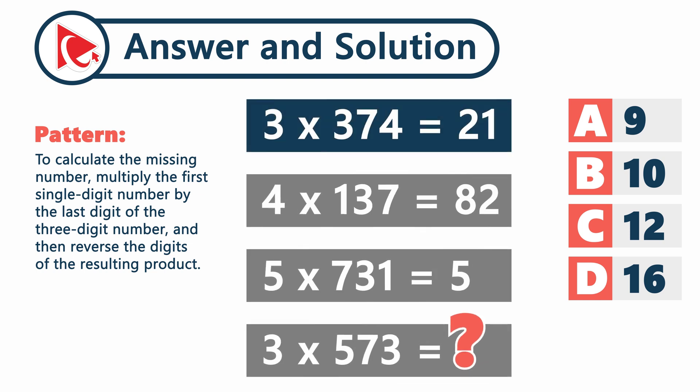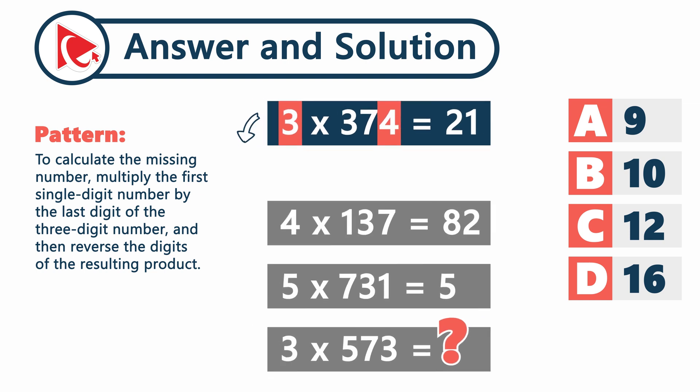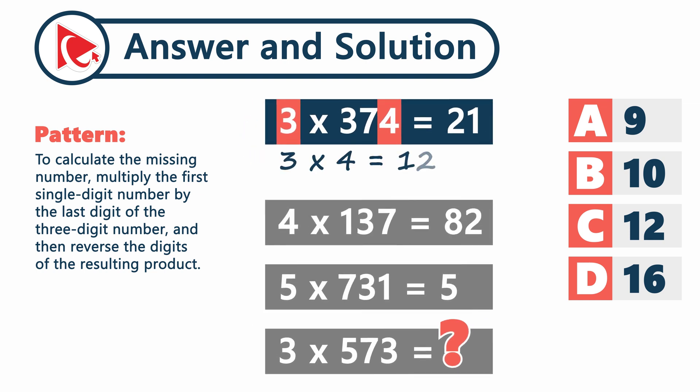The first expression is 3 multiplied by 374 equals 21. To do the actual calculations, we need to take number 3 and then the last digit of the number 374, which is 4.